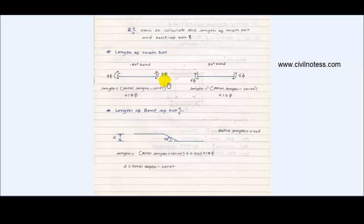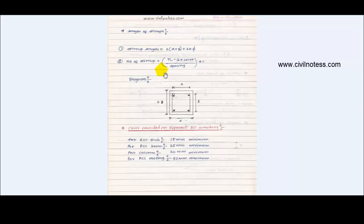For stirrups, the stirrup length and number of stirrups required are very important. Stirrup length is calculated as 2 × (a + b), where a is the width and b is the depth of the stirrup, plus 24d for hooks. Number of stirrups = (total length minus 2 × cover) / spacing + 1.